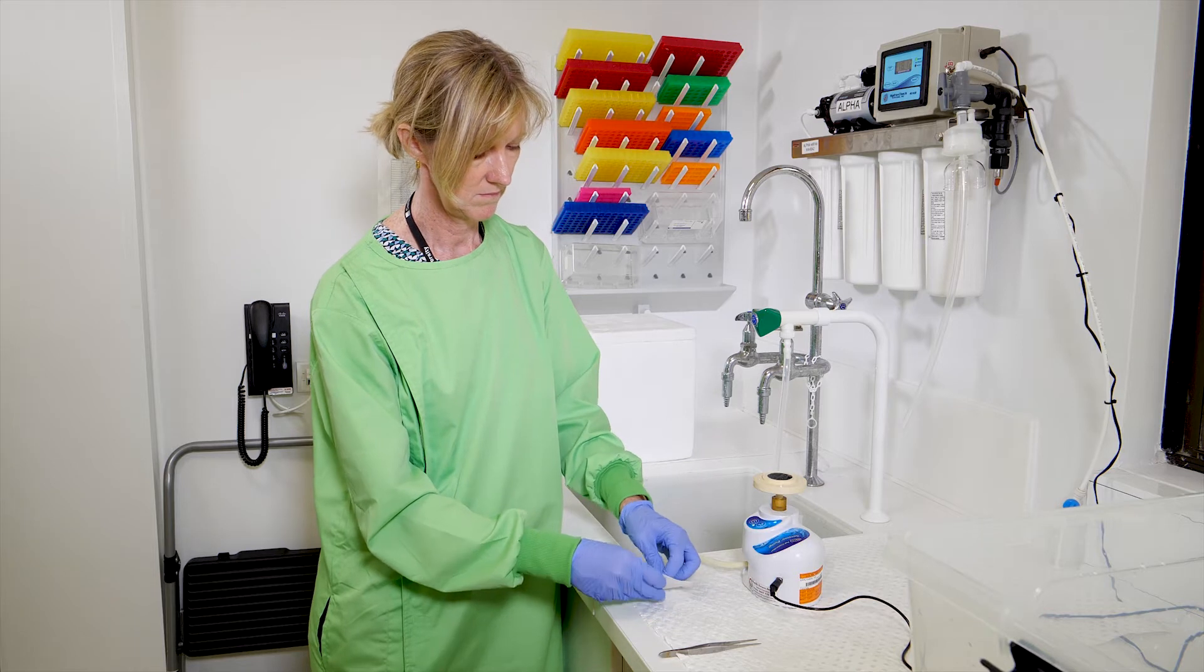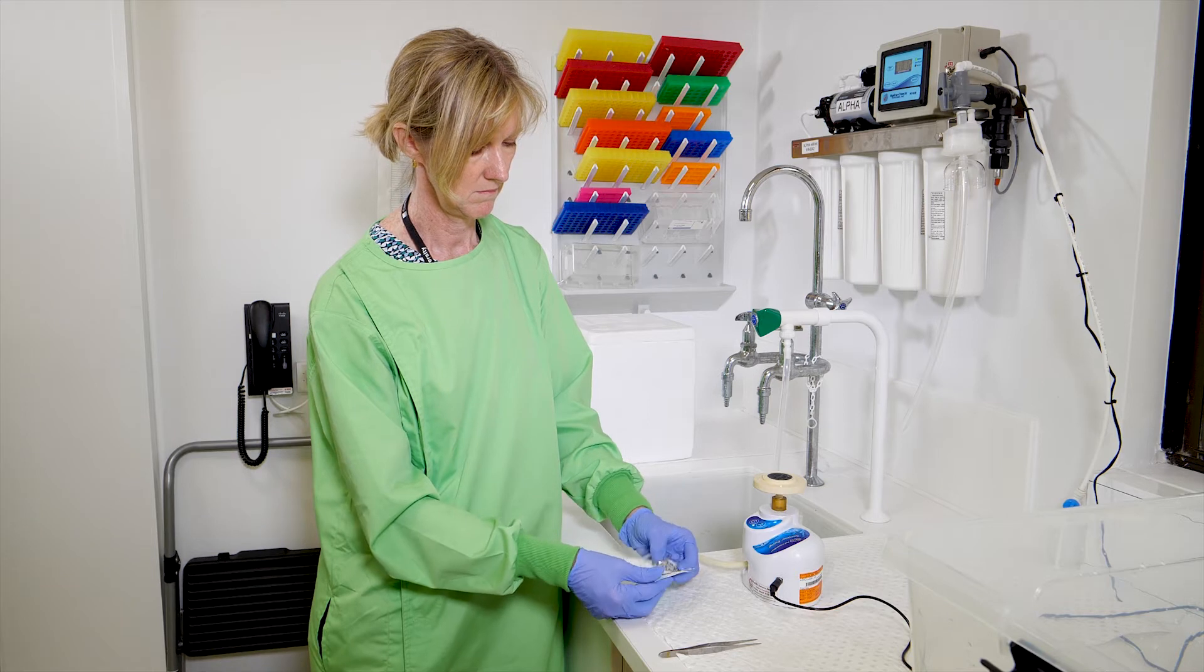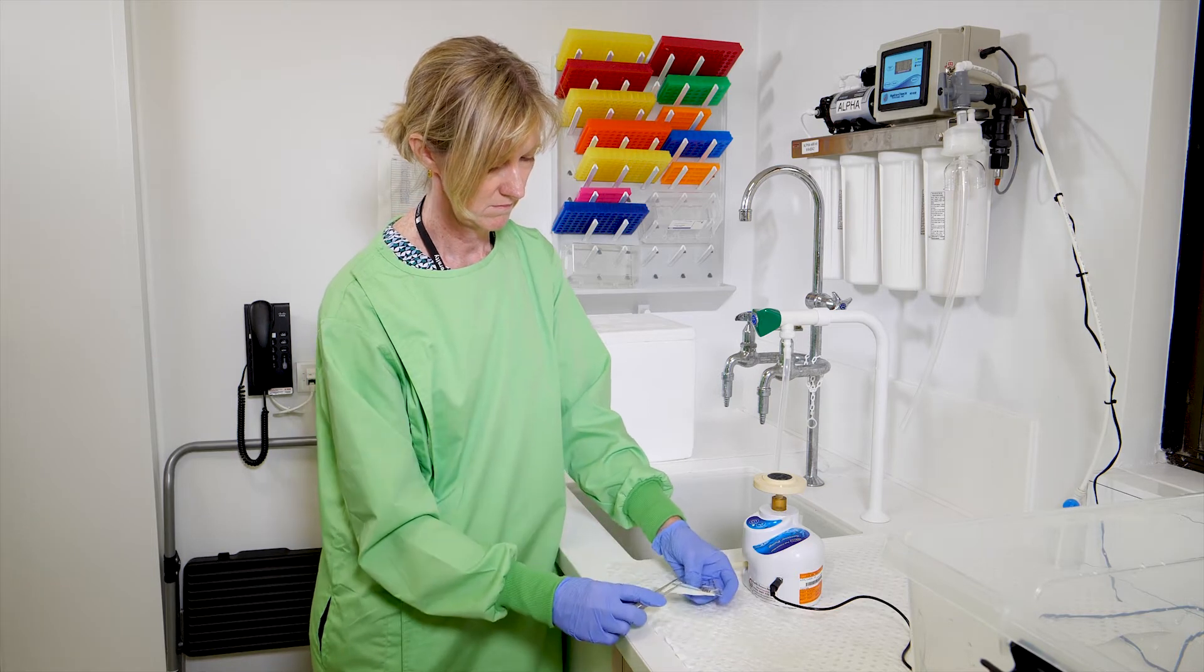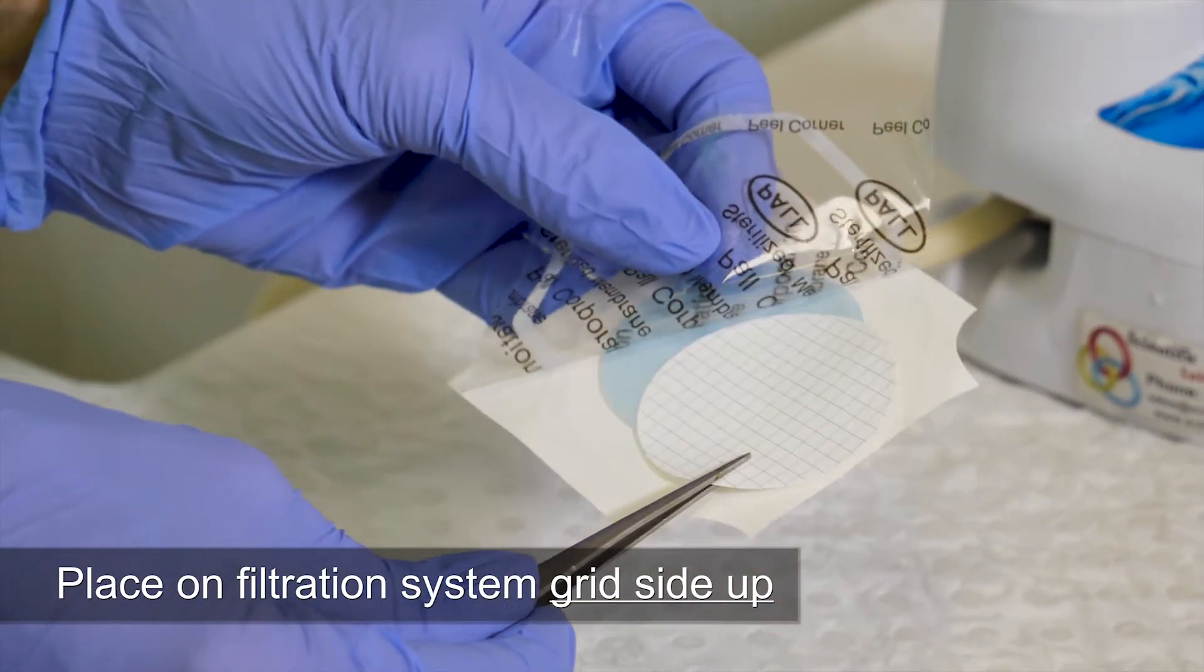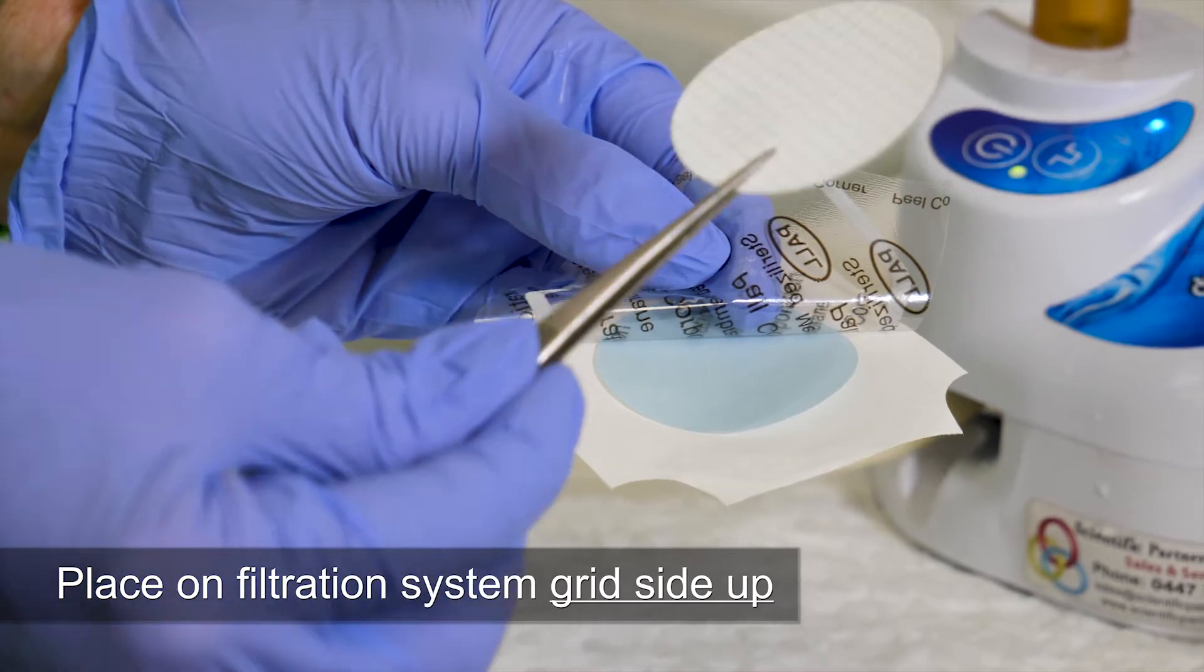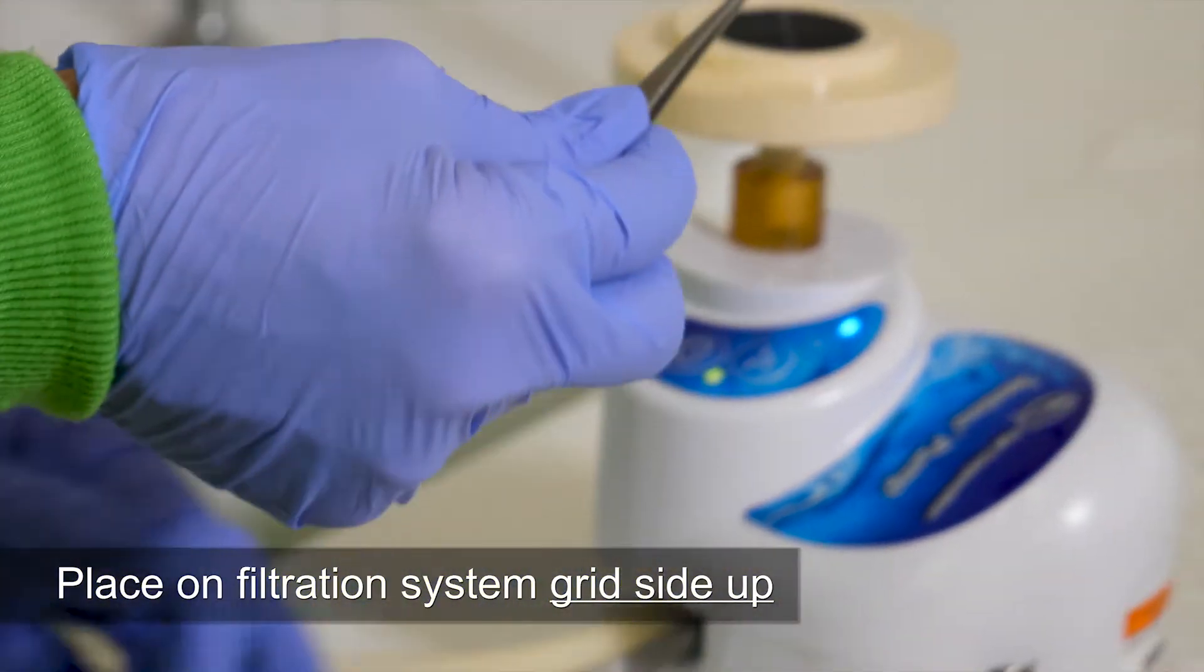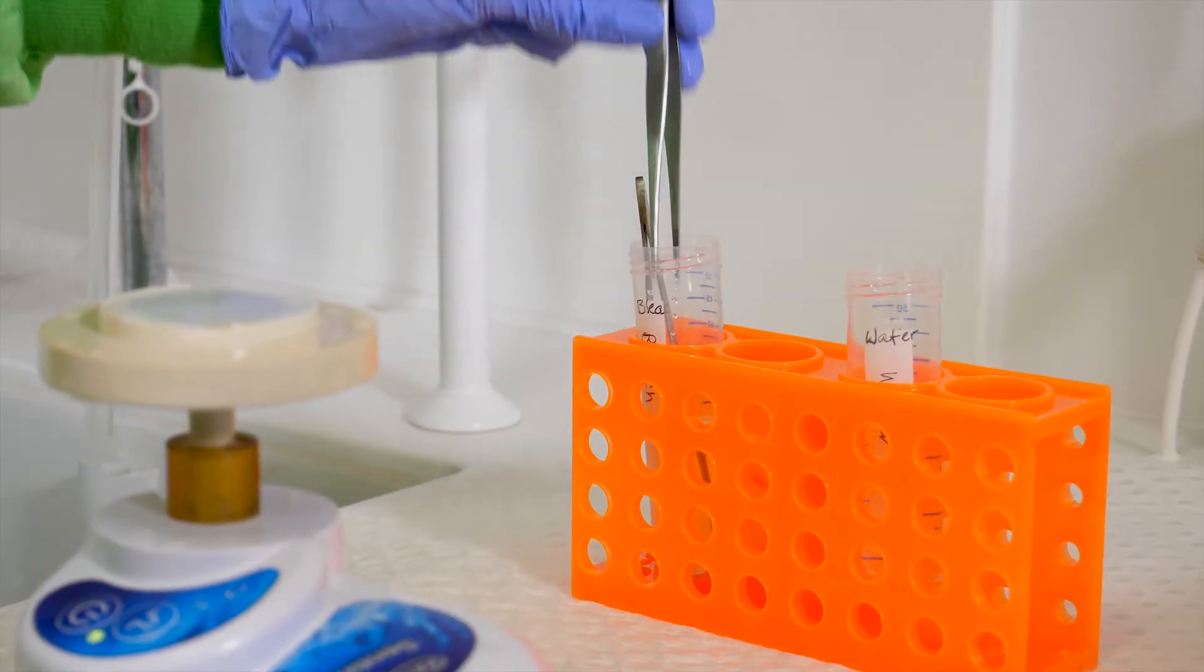Take a filter membrane and open the packaging, taking care not to touch the membrane with your gloves. Separate the filter membrane from the blue paper backing using the clean forceps. Note that the filter membrane may have a grid pattern on one side. Carefully place the membrane onto the filter base with the grid side facing upwards. Place the forceps back into the bleach to soak.